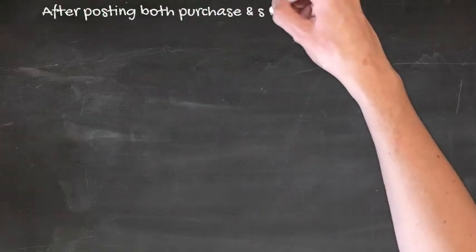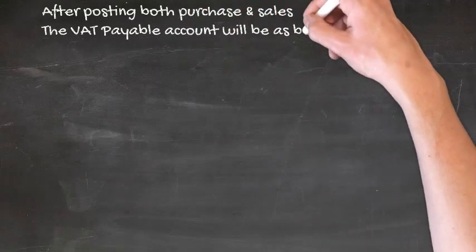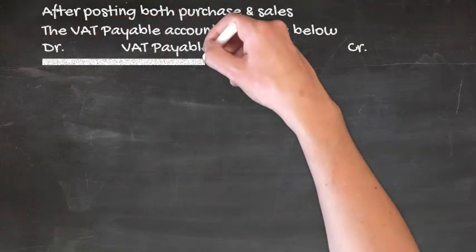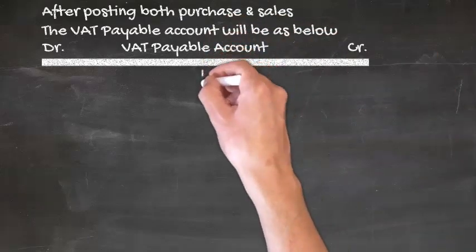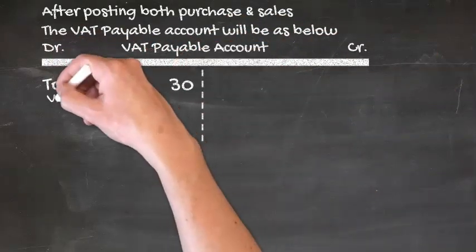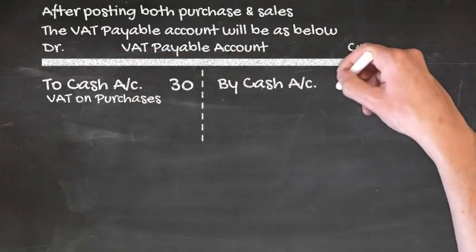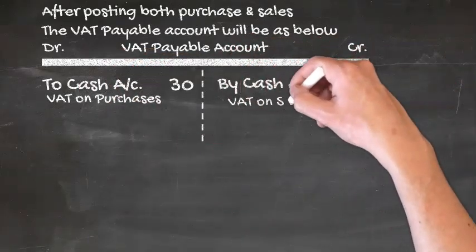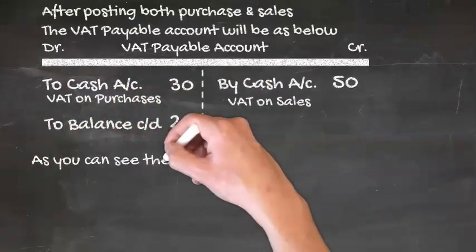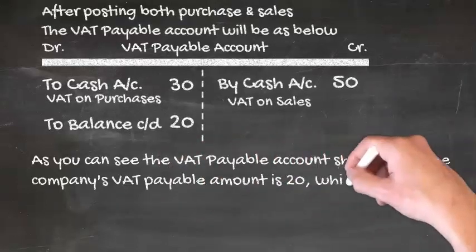After posting the purchase and sales entries to the ledger, the VAT payable account will show a payable balance of $20, which is 5% of $400 — that is the handling charges of $200 plus the profit of $200 — the value added by the supplier to arrive at the selling price. This is why the tax payable is called the value-added tax payable.